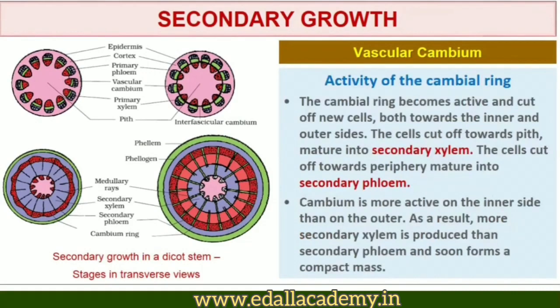Now, the activity of the cambial ring: the cambial ring becomes active and begins to cut off new cells both towards the inner and the outer sides. The cells cut off towards the pith mature into secondary xylem, and the cells cut off towards the periphery mature into secondary phloem. The cambium is generally more active on the inner side, so the amount of secondary xylem produced is more than secondary phloem.